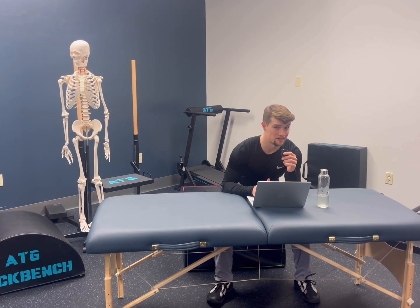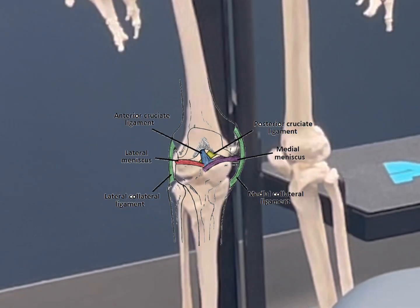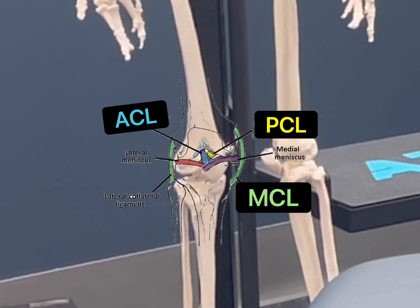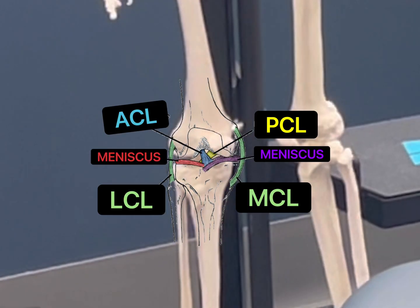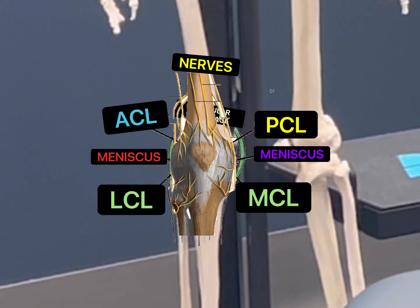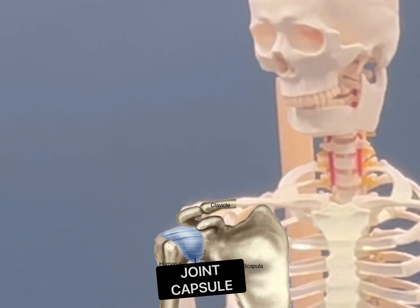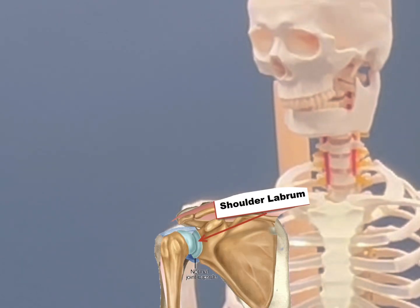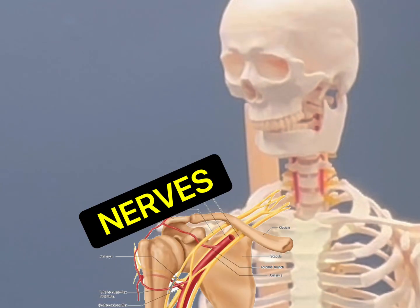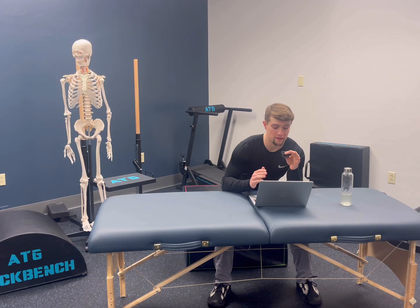What does all of this mean for the knees and shoulders? For the knee, we have the joint capsule and its connected parts — the ACL/PCL and the MCL/LCL, the meniscus, the articular cartilage, the various nerves around the area, and the various tendons. For the shoulder, we have the joint capsule and its various ligaments, the labrum of the shoulder, the articular cartilage, the various nerves, the rotator cuff muscles and tendons.